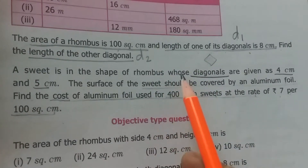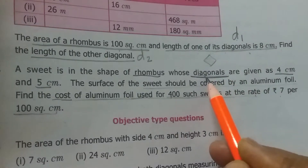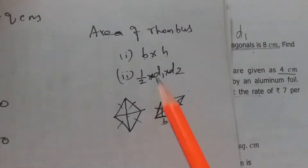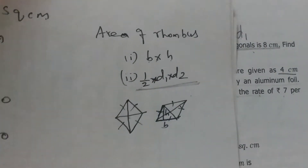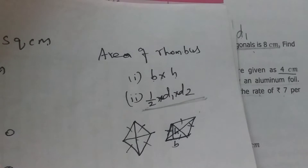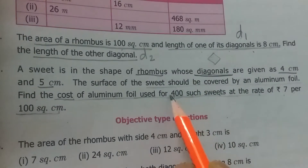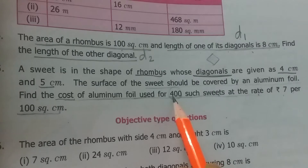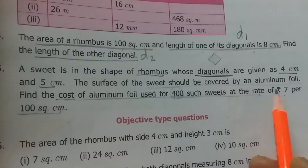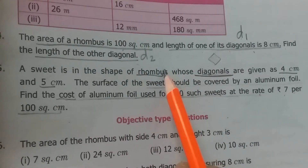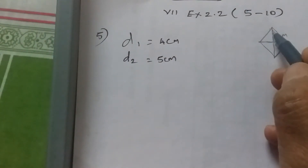The shape of the sweet is a rhombus and we are given the diagonals, so the area formula is half into d1 into d2. First find the area of one sweet, then multiply by 400 sweets to get the total area, and after that calculate the cost. The sweet is in the shape of a diamond: diagonal one is 4 cm and diagonal two is 5 cm.